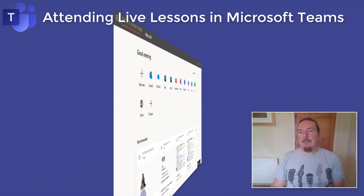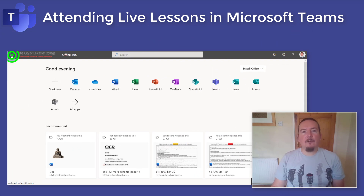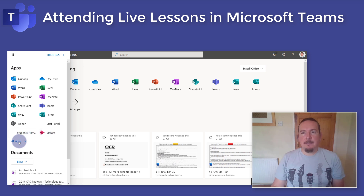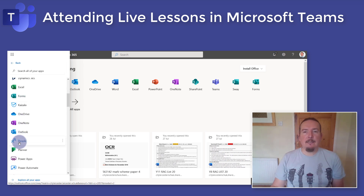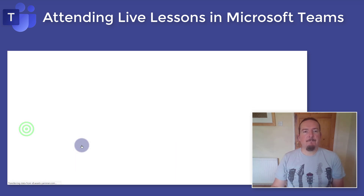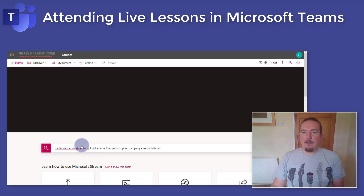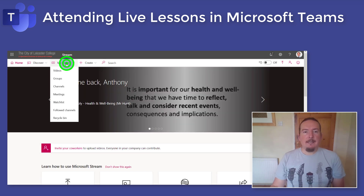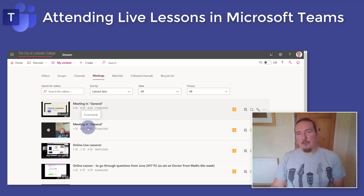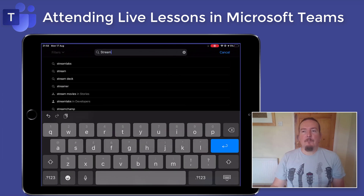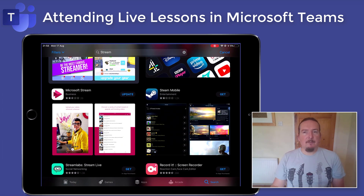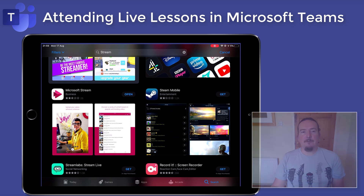Alternatively, you can go to Microsoft Stream by clicking on the waffle. You can see mine is pinned here, but you might need to go down and click on all apps before you can see it. Once you get to Stream, click on My Content and then select Meetings, and it will show you all the videos of all the live lessons that you've attended. On mobile, you might be better off installing the Microsoft Stream app from the App Store or Play Store and finding your lessons through the app.